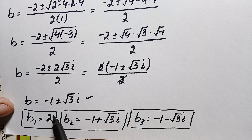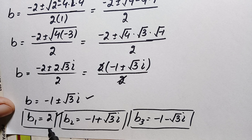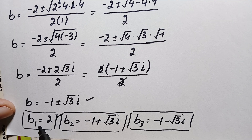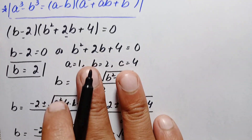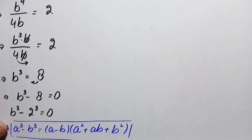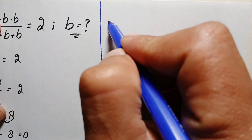Now we will verify that b equals 2 is the exact and correct real solution of this problem. Let's substitute it back into the original equation.